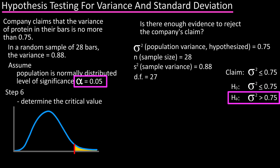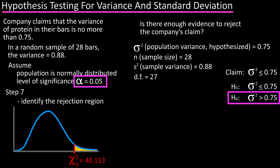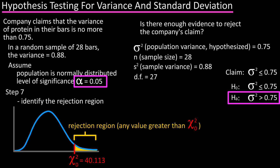Step six is to determine the critical value. Since this is a one-tailed right-tailed test, there will be only one critical value. With alpha equals 0.05, we need to find chi-square naught in the chi-square distribution table where the area to the right equals 0.05. We go to the 0.05 column at the top and the 27 degrees of freedom row on the left; the value where these intersect is 40.113. So the critical value chi-square naught equals 40.113. Step seven: the rejection region is any standardized test statistic greater than chi-square naught, which is any value greater than 40.113.